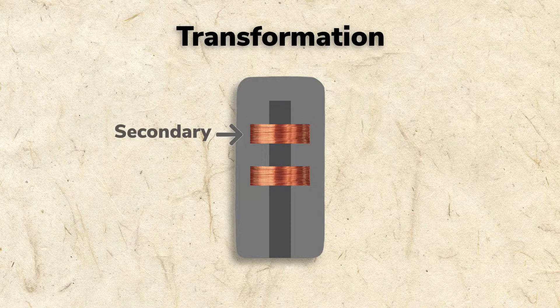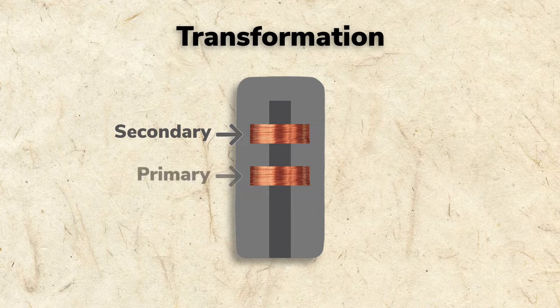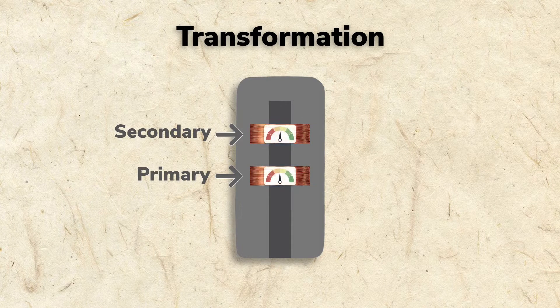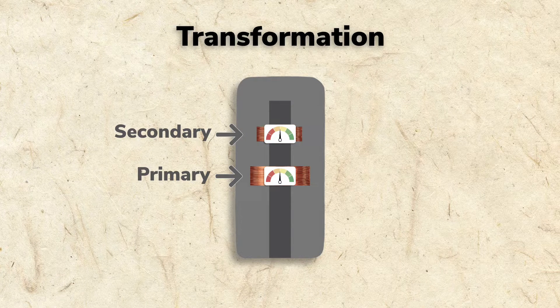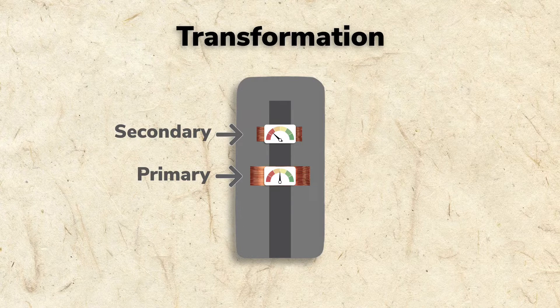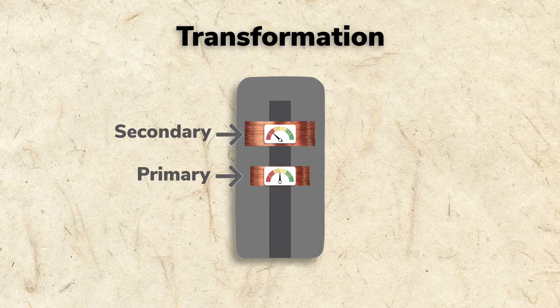If the number of windings on a secondary are the same as the primary, voltage from coil to coil stays the same. If the number of windings on the secondary are fewer, voltage is reduced. If the secondary windings are more numerous, voltage is increased.